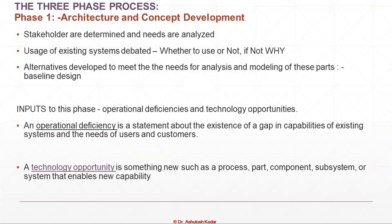In phase one, architecture and concept development: we talk to stakeholders, determine and analyze their needs. We debate on existing systems — why can't the stakeholder use the existing system, why does he need changes? We develop alternatives to meet the analyzed needs and form a baseline design. The input is operational deficiency — the gaps between the capabilities of existing systems and the needs of the customer. Technology opportunity means something new such as a process, component, subsystem or system that enables new capability.